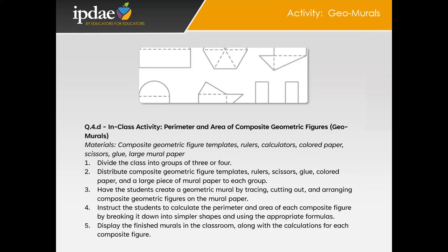Our next activity is Geomurals. The Geomurals activity is a dynamic and engaging way for students to learn about the perimeter and area of composite geometric figures. By creating their own geometric murals, students apply their knowledge of geometry in a creative and collaborative setting. Begin by dividing the class into groups of three or four students. Gather the necessary materials, including composite geometric figure templates, rulers, calculators, colored paper, scissors, glue, and large mural paper.